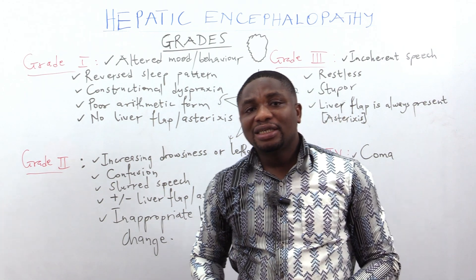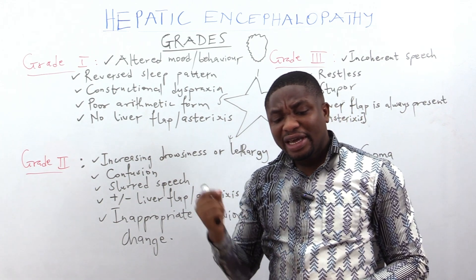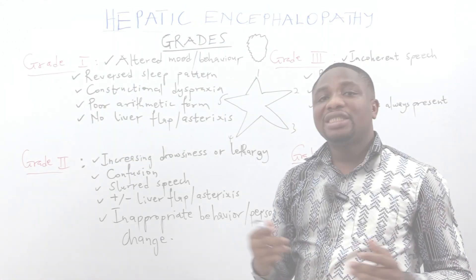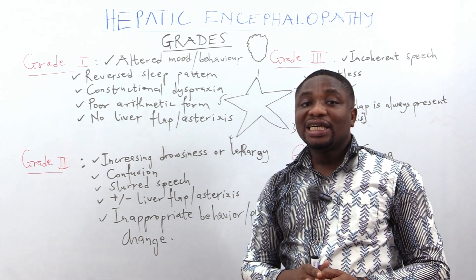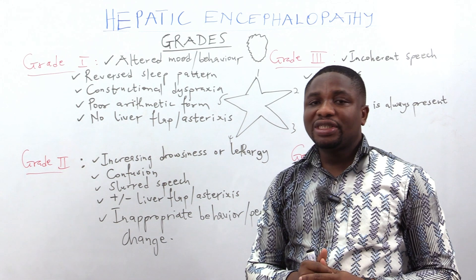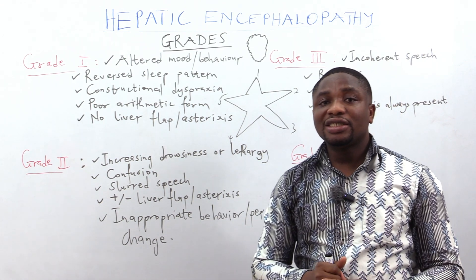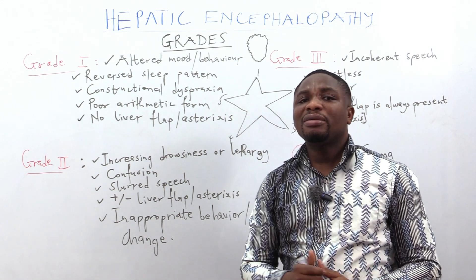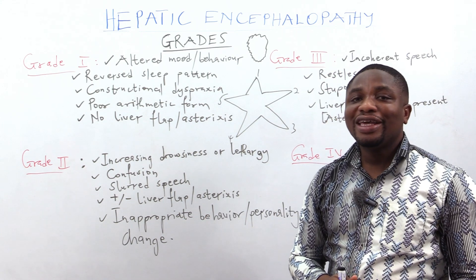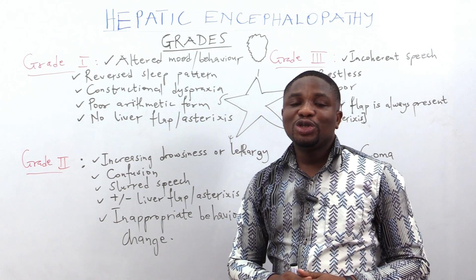For hepatic encephalopathy Grade 2, you will notice that the patient would have increasing drowsiness or lethargy. Another feature is confusion or confused speech. Slurred speech is also a feature of Grade 2. Asterixis or liver flap may or may not be present. The patient also exhibits inappropriate behavior or personality change — for this feature, you would need to ask a family member who has been around the patient, as the patient cannot tell you how their behavior has changed over the period.